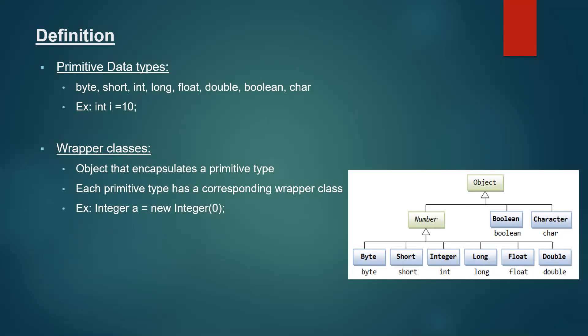An example of declaring and initializing a value for a wrapper class object: take Integer as a wrapper class. Since it is an object, we use the keyword new — Integer with 0 passed as the argument, and this value 0 is assigned to the object A. This is the declaration of a wrapper class object.